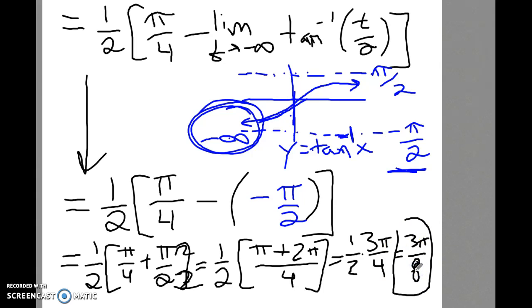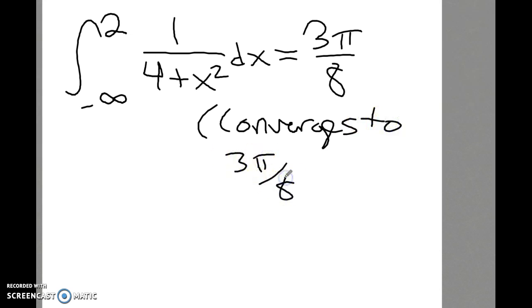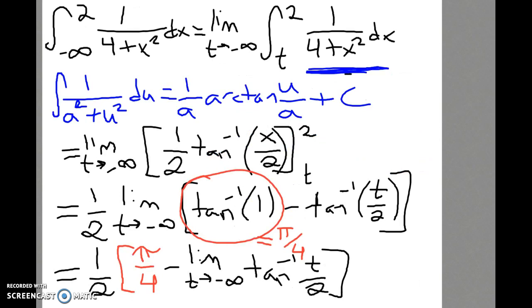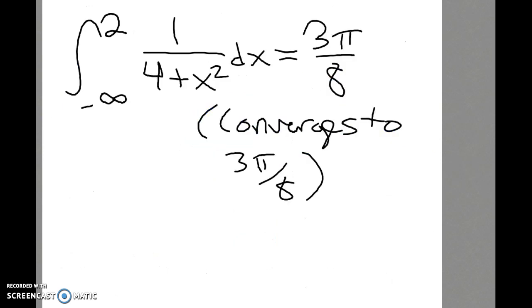Since we got a finite number here, we would say that the improper integral from negative infinity to 2 of 1 over 4 plus x squared converges to 3 pi over 8. It's acceptable to just write equals 3 pi over 8, but when we write that, what we mean is that improper integral converges. That means that this area of the unbounded region, if we created that table, it looks like that table would have values that were actually approaching the value 3 pi over 8.